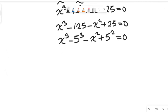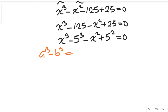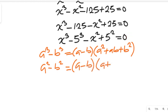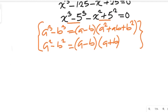Now let's recall some algebraic formulas that are very important. In algebra, a to the power of 3 minus b to the power of 3 can be equal to a minus b, multiplied by a squared plus ab plus b squared. Also, a squared minus b squared is equal to a minus b multiplied by a plus b. We are going to apply these formulas to simplify our expression.